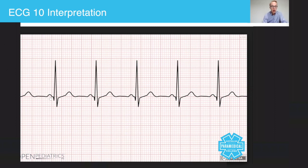Then you need to look at the QRS complex. Is there a QRS after every P wave? Yes. So this is the QRS complex here — this is the Q, this is the R, this is the S. Is it nice and straight — straight up, straight down? Yes it is. Is the QRS interval less than two and a half small squares? Yes it is. Good.